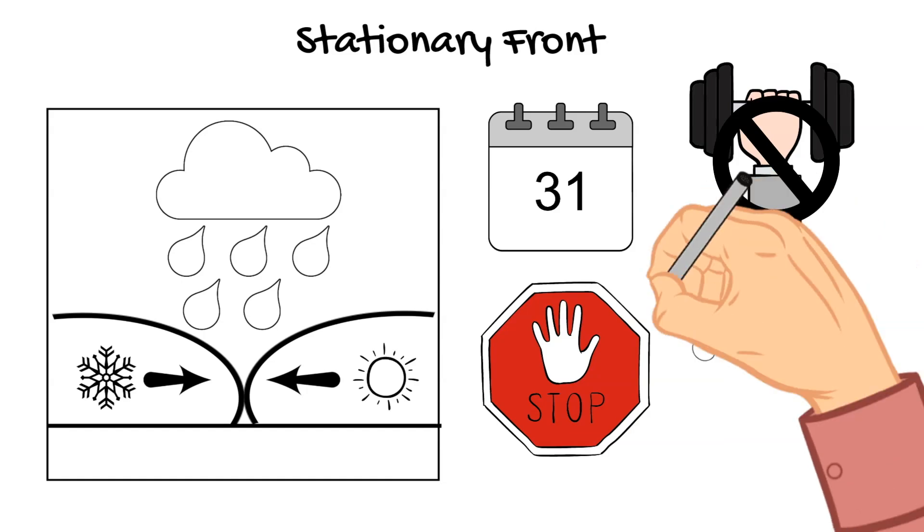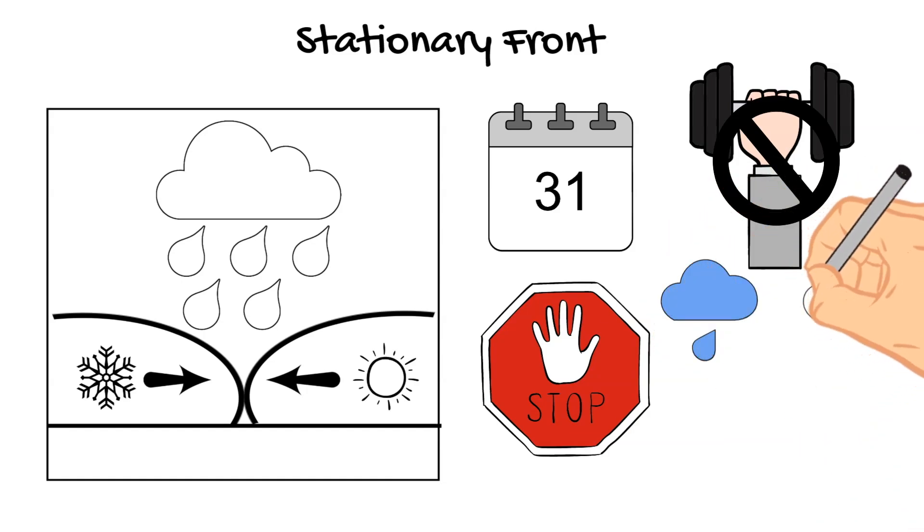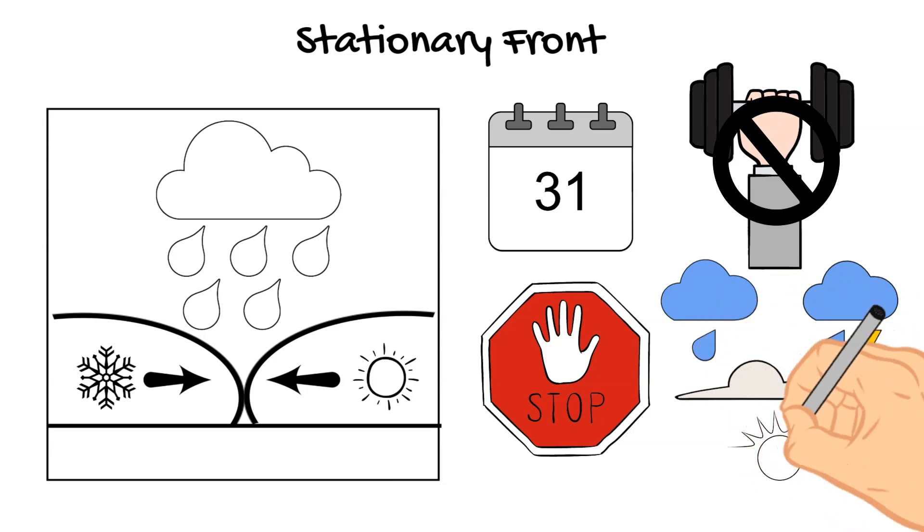So like I said, these fronts can cause weather conditions that last for days or even weeks as these two air masses interact and create changing weather patterns. These stationary fronts can bring different types of precipitation as well, including thunderstorms, fog, or they may not bring precipitation at all. It could bring clear skies.